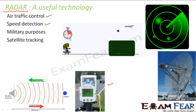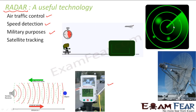Radar is also used for military purposes — to detect enemies so they cannot attack unannounced, to guide weapons, and to detect enemy weapons. It is also used for satellite tracking, for example by organizations like NASA to track spaceships and satellites in space.